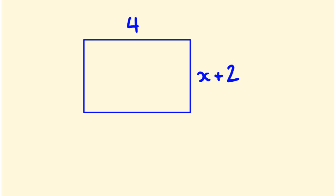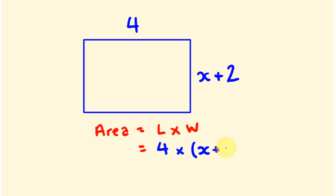The way that we could write an algebraic expression here is as follows. Say we wanted to do one for the area. The area is equal to the length times the width — that's the area of a rectangle. The length is 4 and the width is x plus 2. We don't need to write it as 4 times x plus 2; we can just write 4(x+2) like this. So far this is in a factorized form — we have two factors, 4 and x plus 2.